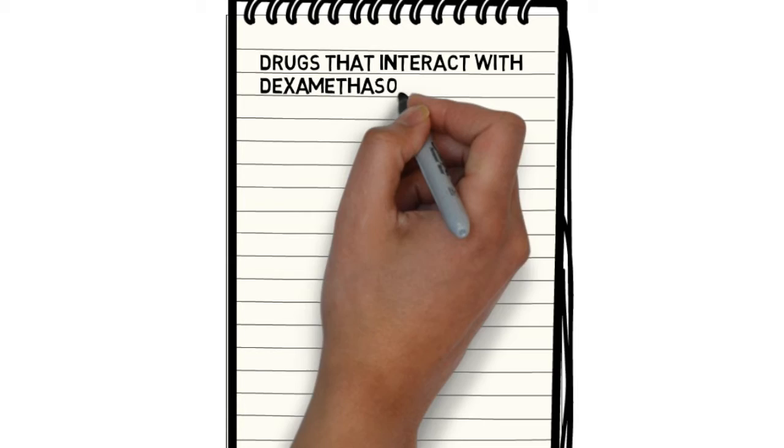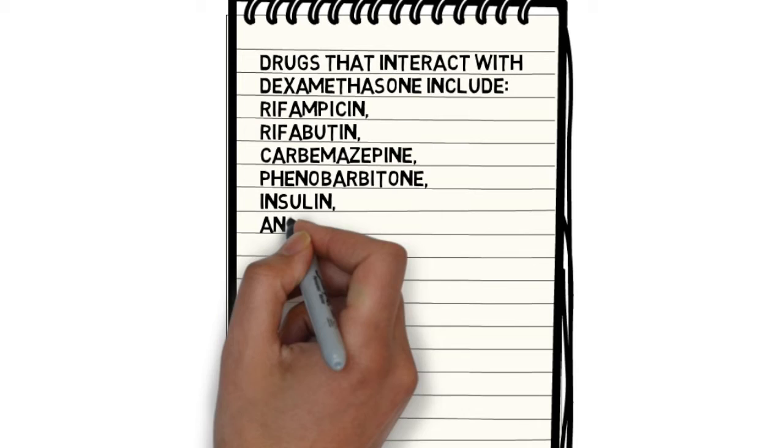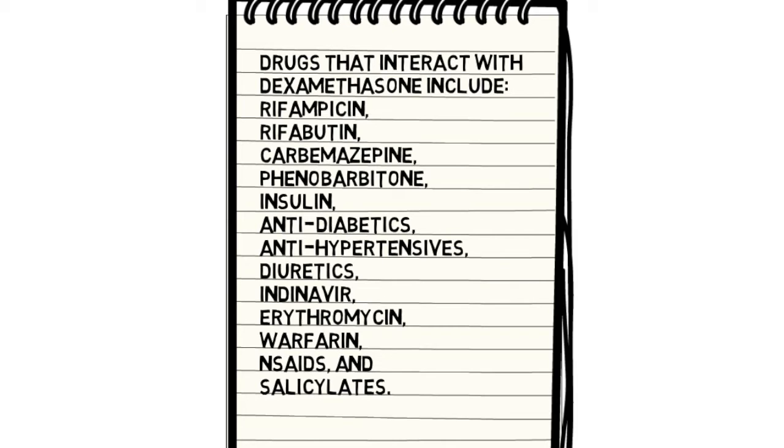Drugs that interact with dexamethasone include rifampicin, rifabutin, carbamazepine, phenobarbitone, insulin, antidiabetics, antihypertensives, diuretics, indinavir, erythromycin, warfarin, NSAIDs, and salicylates.